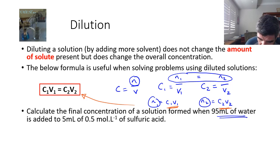So if we use our formula C1 V1 equals C2 V2, assuming that the amount of sulfuric acid is not going to change before and after. The initial concentration is 0.5. The initial volume is 5 ml, so 0.005. That's going to be equal to the final concentration, or C2.